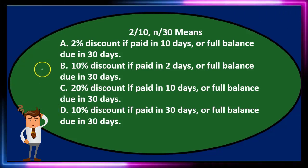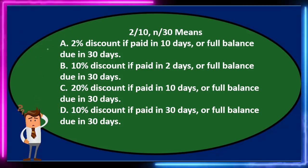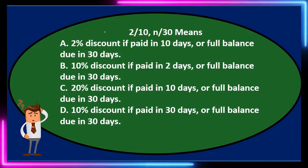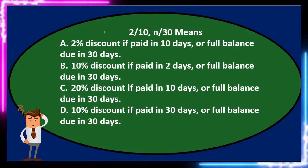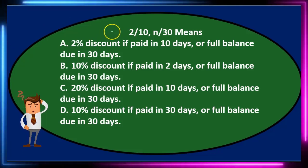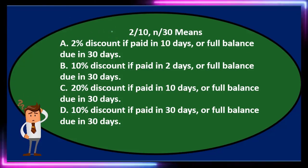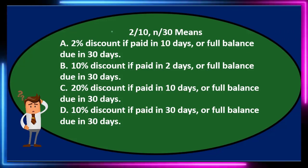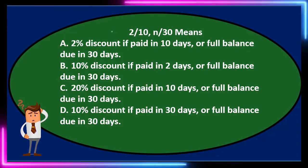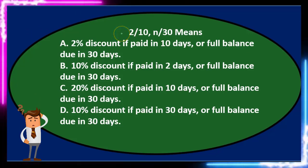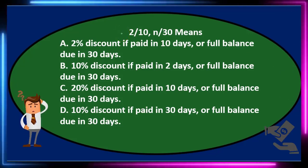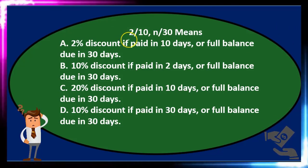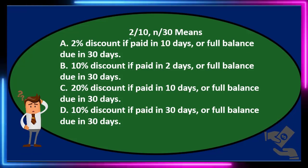Let's go through these one more time, crossing out what we can using the process of elimination. The question again: 2/10, N/30 means what? First, we might want to think about what that means and put that down in our minds, then go through the options and see what closely matches what we believe it to mean. This is going to be terms — typically payment terms when we make a sale or purchasing terms.